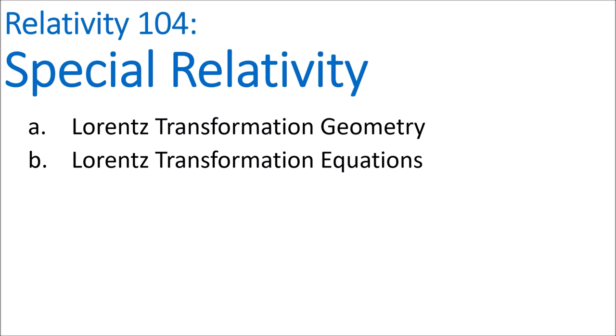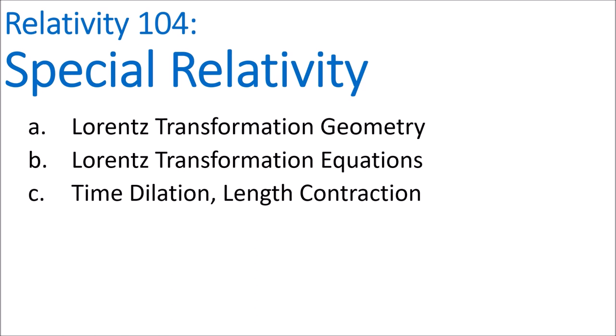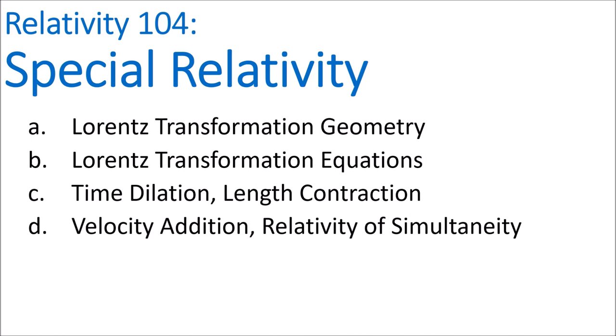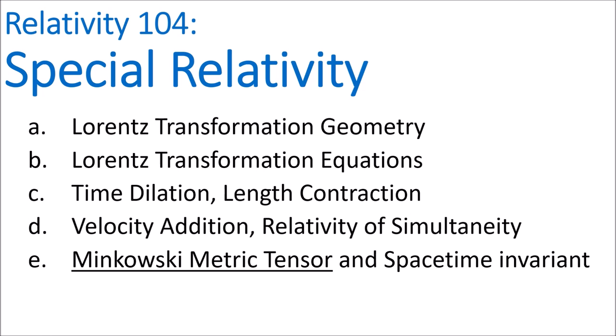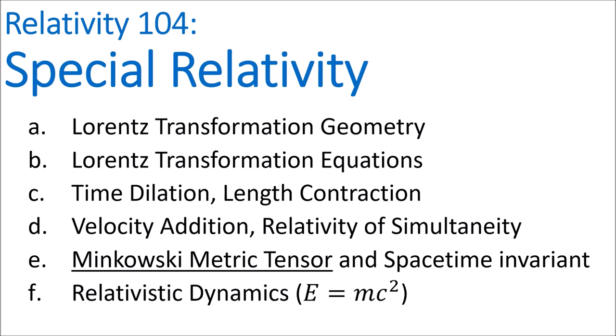Then we'll talk about how the Lorentz transformation leads to time dilation, length contraction, and new rules for velocity addition, and then the relativity of simultaneity. Next we'll talk about the Minkowski metric tensor and the spacetime invariant, which helps us measure distances in spacetime. Finally we'll discuss relativistic dynamics, which explains how things like forces, energy, and momentum behave in special relativity. And we'll also learn about E equals mc squared.